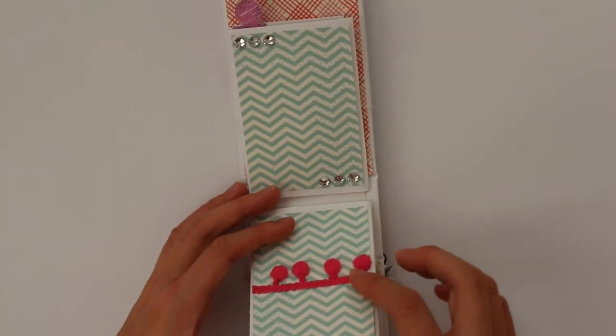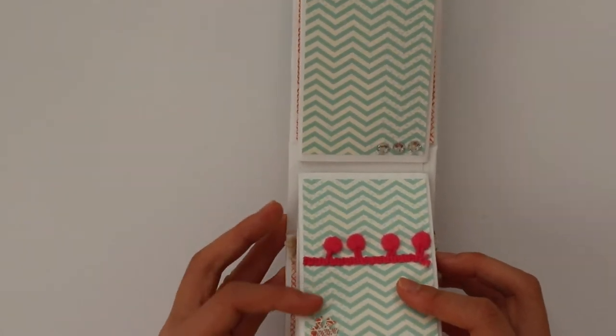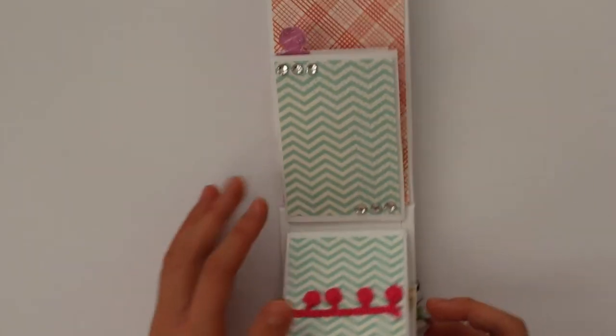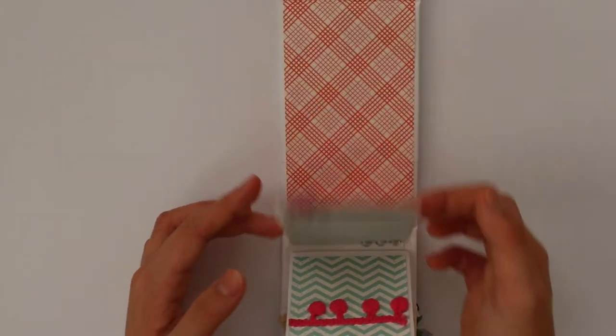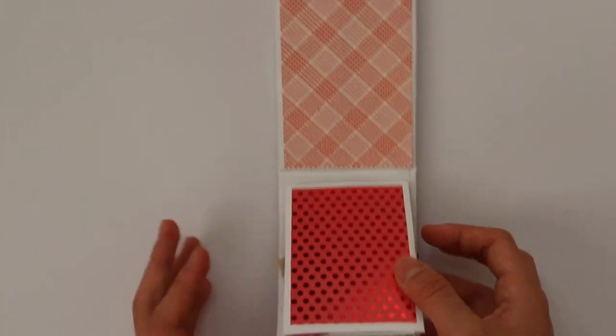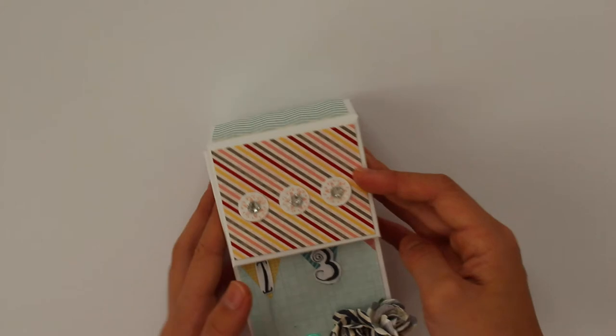Here's ribbon, some pom-pom trims, and then another ribbon punch out, and then three gems here. It's just plain on the back, so that's pretty much my mini album.